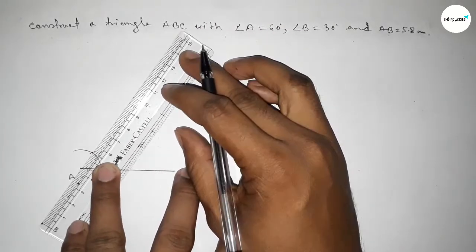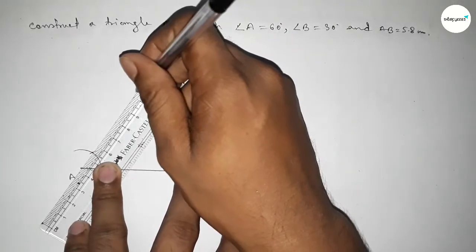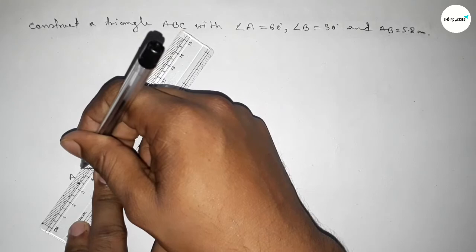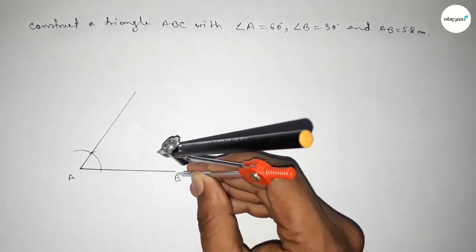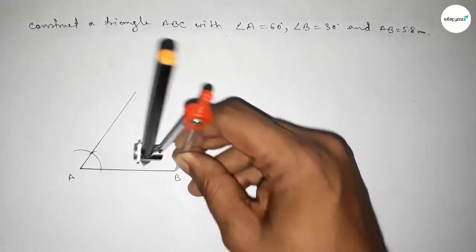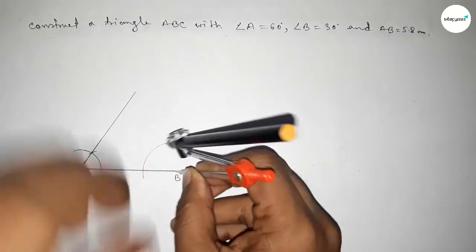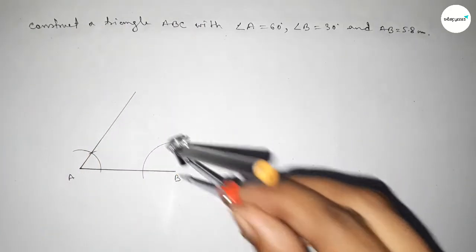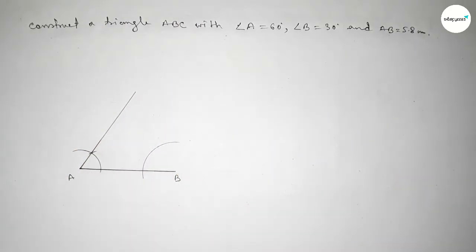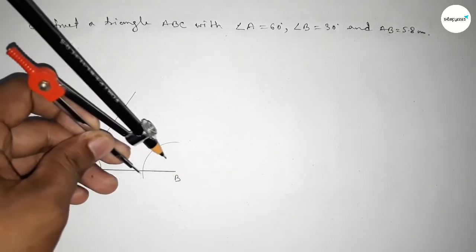Joining this to get a 60 degree angle. Next we have to draw a 30 degree angle at point B, so putting the compass here and taking any length and drawing an arc.